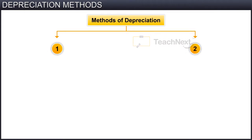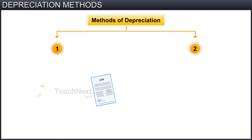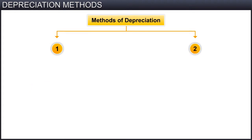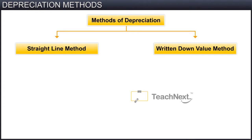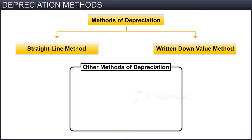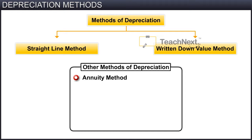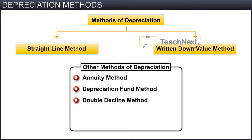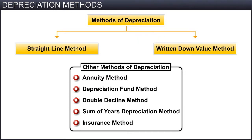In this module we will learn about the two methods of depreciation as mandated by law and enforced by professional accounting practices in India. These two methods are known as the straight line method and written down value method. Besides these two commonly followed methods, there are various other ways of calculating depreciation, including but not limited to the annuity method, depreciation fund method, double decline method, sum of years depreciation method, and insurance method.